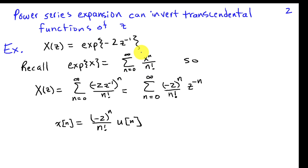So I can apply this power series expansion and replace X by negative 2 Z inverse to write that X of Z is this particular power series, negative 2 Z inverse quantity to the Nth power divided by N factorial.